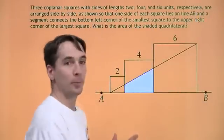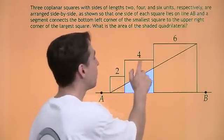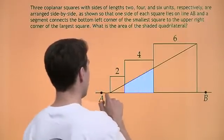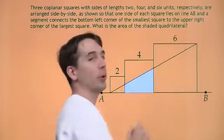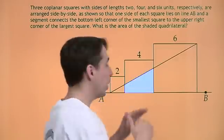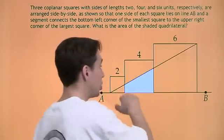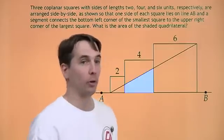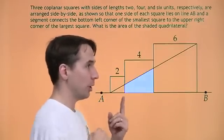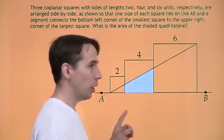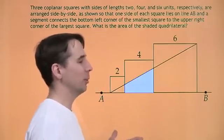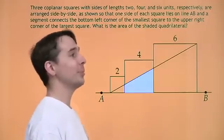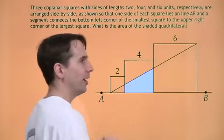All right, here's our first problem. We got three squares. Side lengths two, four, and six. And we put those squares side by side, just like this, and we draw a line from the bottom left corner to the upper right corner. And then we're gonna shade the part of the middle square that's below the line. It's gonna form a shaded quadrilateral right here. And that's what we have to find the area of. No, there's just one. There's only one shaded quadrilateral here, Harvey. We're gonna find the area of this quadrilateral here.